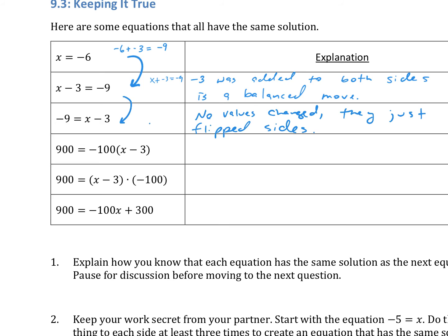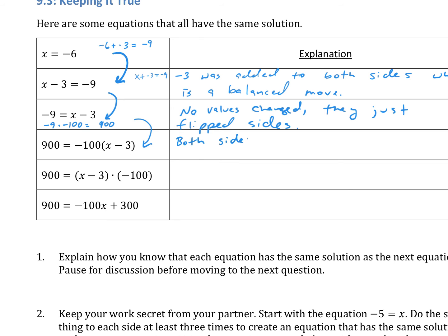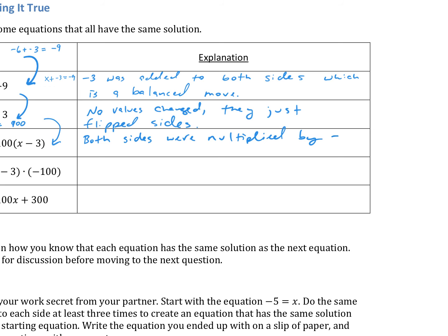Now we're at 900 equals negative 100 times (x minus 3). You need to figure out how negative 9 became 900. I can see that x minus 3 is in parentheses and is multiplied by negative 100, so it looks like they're multiplying both sides by negative 100. Let's double check: negative 9 times negative 100 — since the signs are the same, I'll have a positive 900. So yes, both sides were multiplied by negative 100, which is a balanced move.